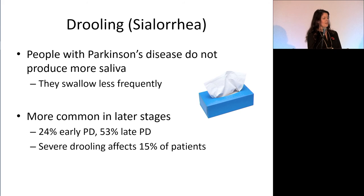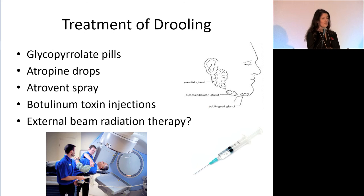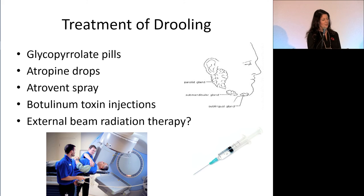Drooling is related to not swallowing as frequently rather than producing more saliva, but I've included it here as it's often considered a non-motor symptom. It is common later on, affecting about 15% of people with Parkinson's. There are pills, drops, and sprays that dry the mouth, but these treatments can affect thinking and memory and so can't be used in people who've already developed dementia. Botulinum toxin injections reduce saliva production and can make a big difference — though it's not covered by the Ontario Drug Benefit program, which is frustrating. There is also some evidence for external beam radiation therapy, though I've not seen this done in practice.